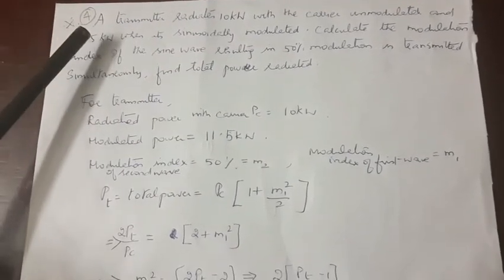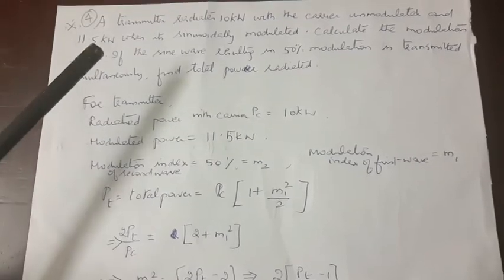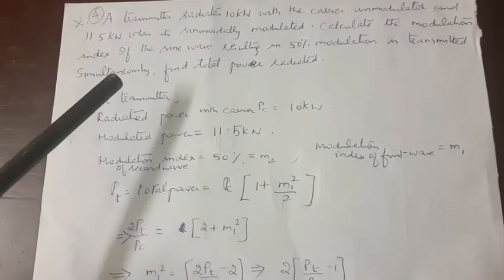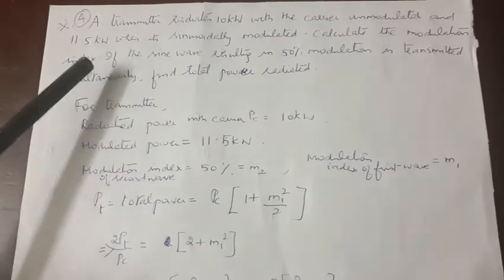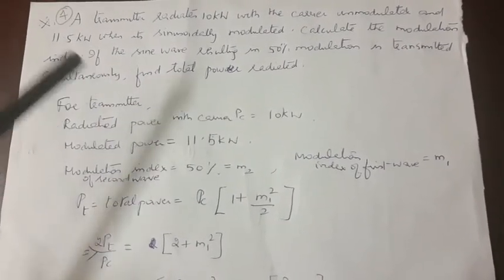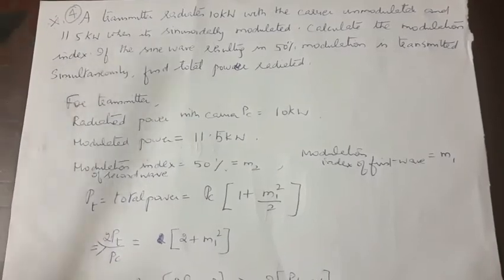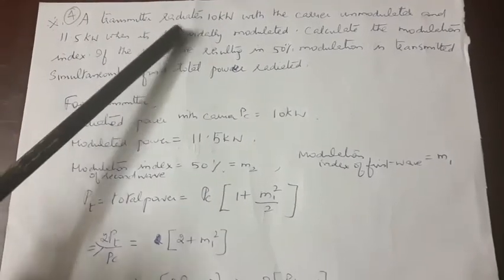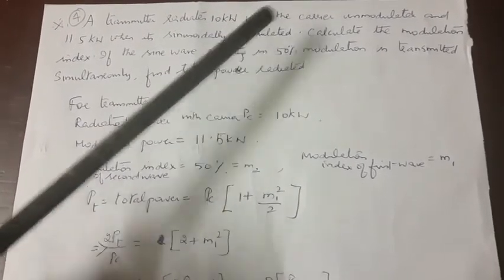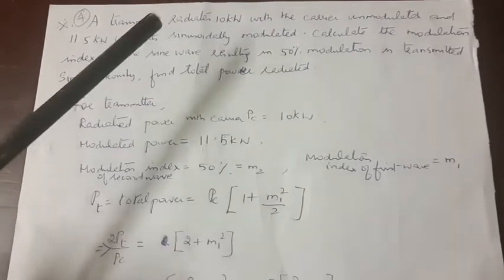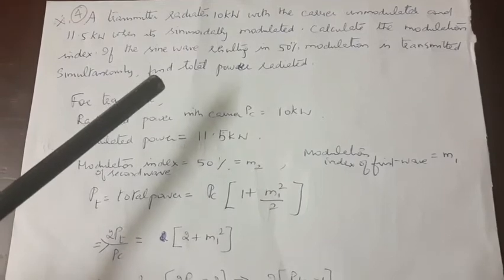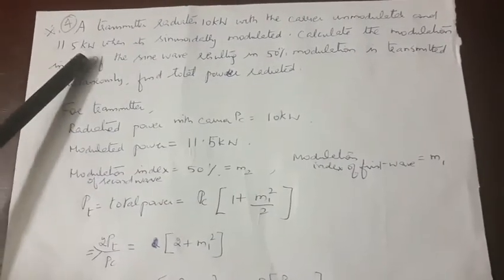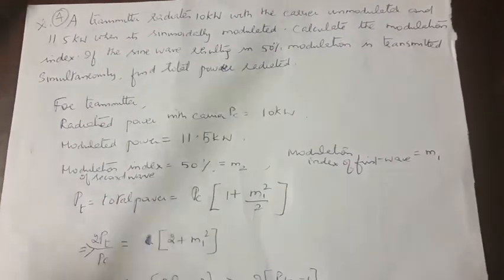We'll take a problem about how to calculate total power if more than one modulation index is involved in the system. First, read out the problem carefully — each and every word carries a message. A transmitter radiates 10 kilowatt with an unmodulated carrier, so the unmodulated carrier power is 10 kilowatt, and 11.5 kilowatt when it is sinusoidally modulated.